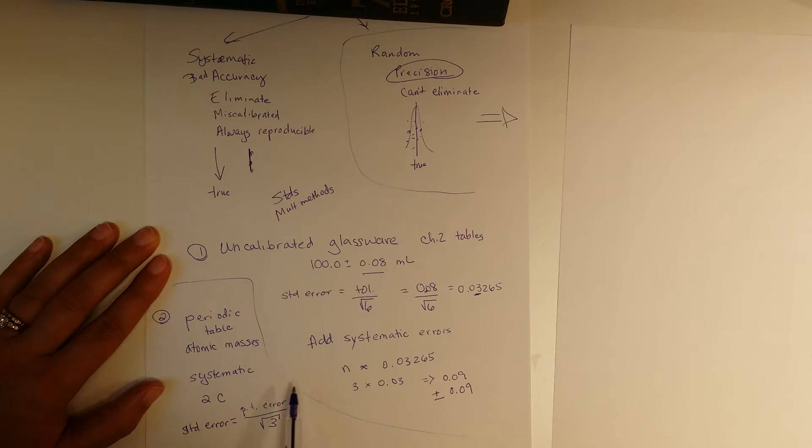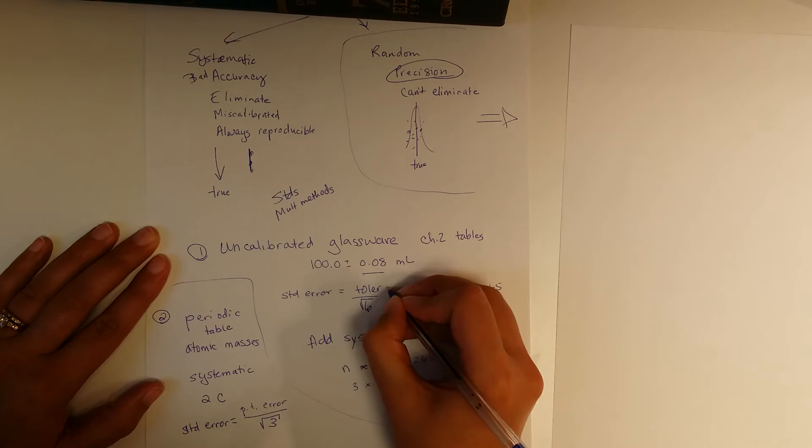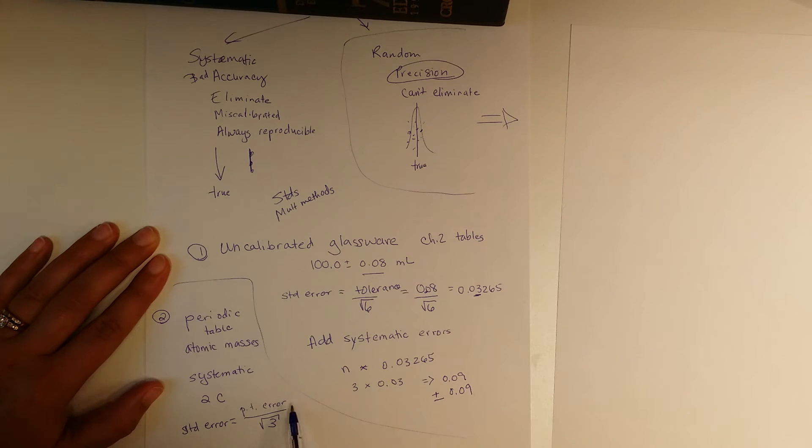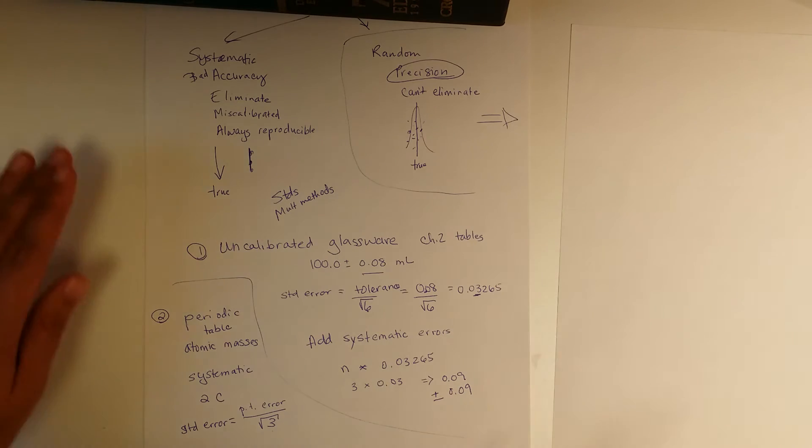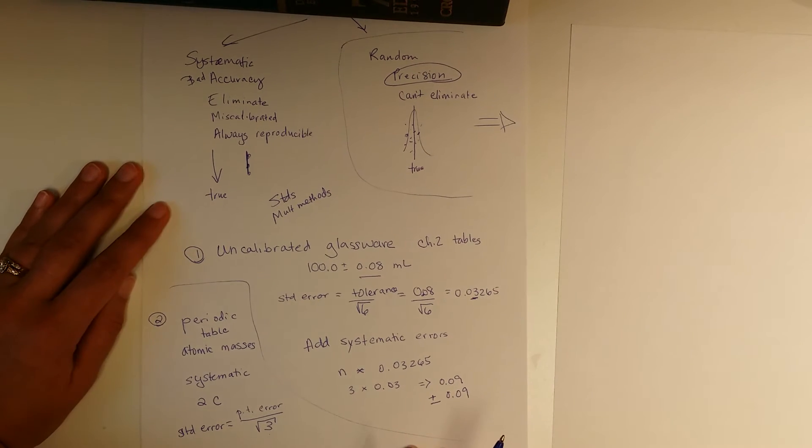We did that same thing here where you see now standard error is, what's this? This is tolerance, right, which was the 0.08. So you go look up on the periodic table for the Harris textbook, find out what the error is on the atom, convert it using the square root of three to a standard error, and then you can do systematic error with it. Okay, so that's the extent of the systematic error.